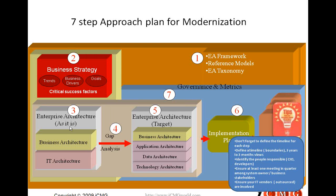It is very important to identify who is responsible for each of these steps. Ensure that there is at least one meeting every quarter among each of the system owners, and at least one review and auditing meeting where all stakeholders from all stages are sitting together. If you are outsourcing some of your IT, it is not a bad idea to involve some of those vendors as well.